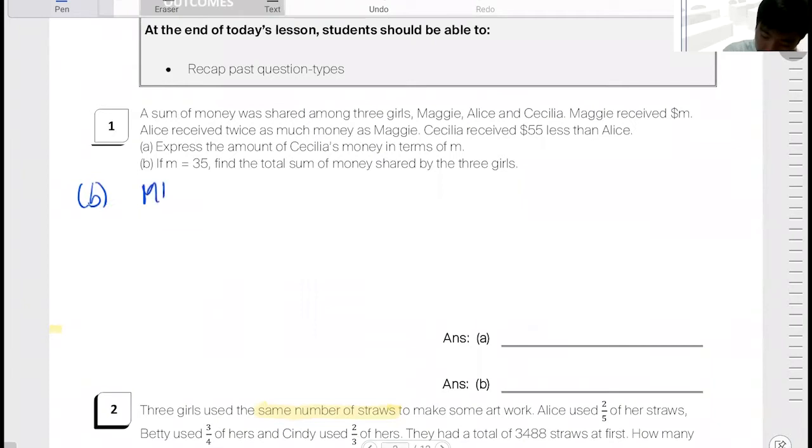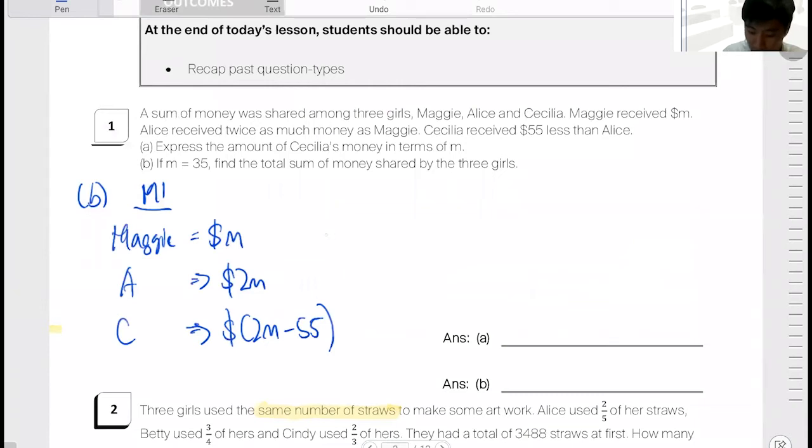The first method is to identify that Maggie is $M, Alice is $2M, and Cecilia is $2M minus 55. What people do for part B is they solve individually.